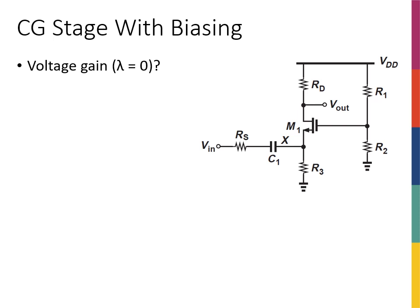Consider the circuit from the previous slide. Imagine there is no R3 and no capacitor — just a short circuit between those two nodes. During DC analysis, the gate voltage VG is set by the resistive divider R1 and R2, which is good. But the source voltage is equally important because we always care about the relationship between VGS and VTH to ensure the transistor is on, and also the relationship between VGS minus VTH and VDS to ensure saturation.